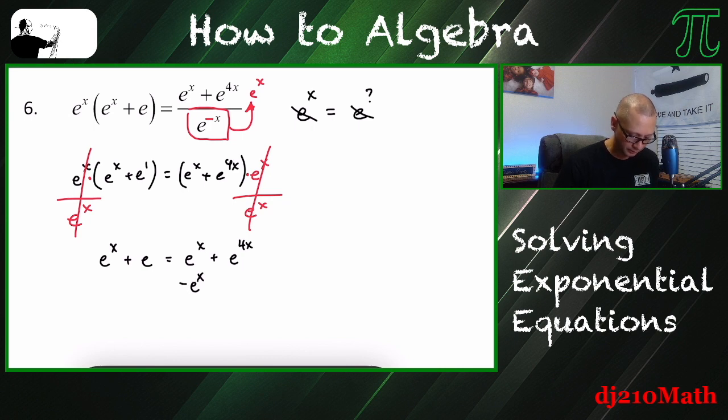I want to combine the things that are similar. I'm going to subtract e to the x from both sides. So if I had e to the x and I take e to the x away, I'm just going to get zero, I'm not going to get anything. So we have e is equal to e to the 4x.